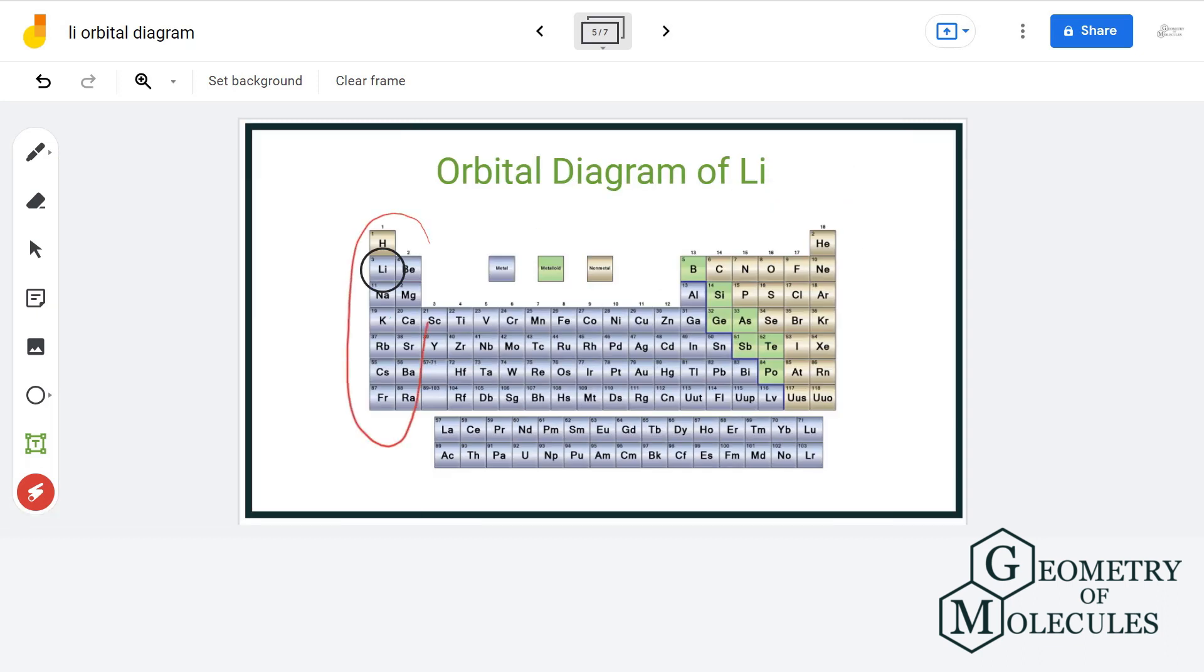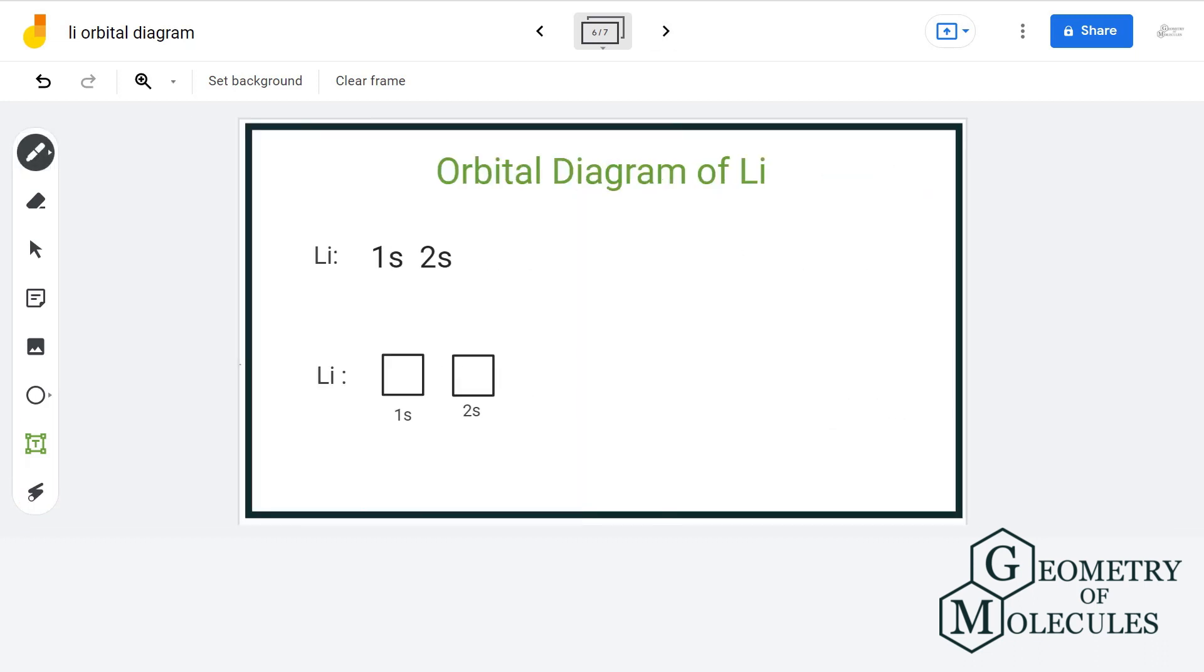Lithium is an s-block element and has atomic number of three. That means that it has three protons and three electrons. Now that we know the number of electrons, it is easy for us to write down its electronic configuration. It will be 1s² and 2s¹.